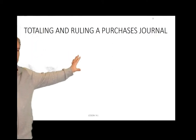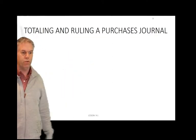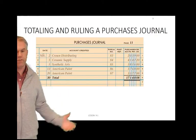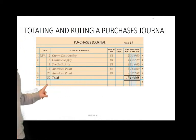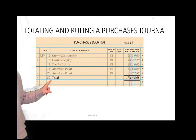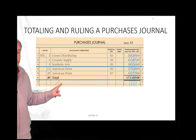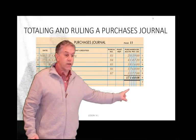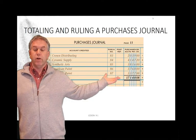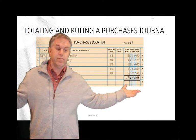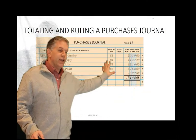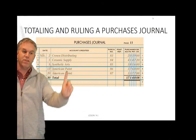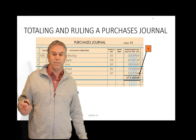You then need to total and rule the purchases journal. When you total and rule it, it's very simple. At the bottom, put 'Totals,' put the date at the end of the month, and add them up. You don't have to worry about your debits equaling your credits, because as long as your math is correct, they will equal — there's only one column.